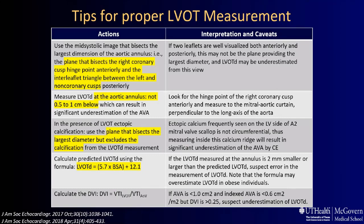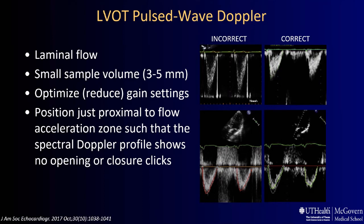For pulse wave Doppler, we need to obtain laminar flow, place the sample volume at the same location where the LVOT diameter is measured, use a small sample volume, optimize gain settings, and position just proximal to the flow acceleration zone so the spectral Doppler profile does not show an opening and closure click. Continuous wave Doppler must be interrogated from multiple acoustic windows — including right parasternal, suprasternal, and the non-imaging Pedof probe — because the insonation angle can result in underestimation of velocity. The same window yielding the maximum velocity is the one that should be used for LVOT velocity and aortic calculation.